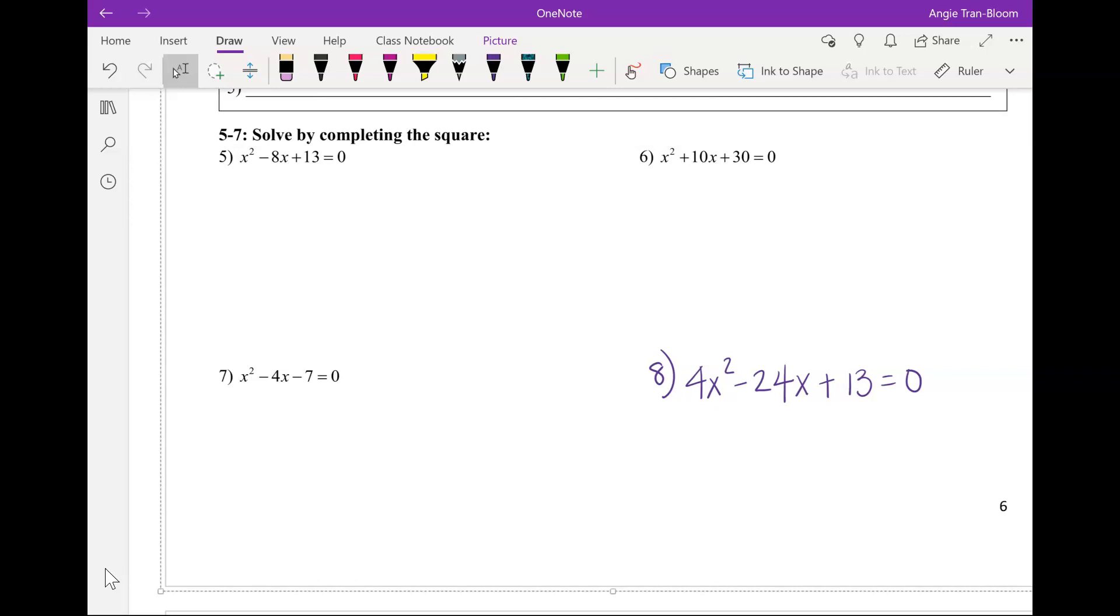Subtract C value from both sides. Beautiful. What's the C value for question 6? Yeah, subtract 30 from both sides, let's do it. Take 30, what you do to one side, you must do it to the other.